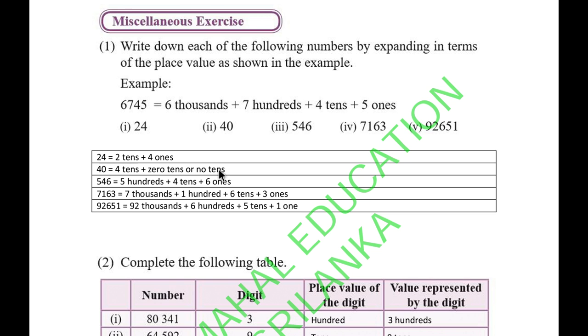Next, 546 should be 5 hundreds, 4 tens, and 6 ones. Then 7,163: 7 thousands plus 1 hundred plus 6 tens plus 3 ones.